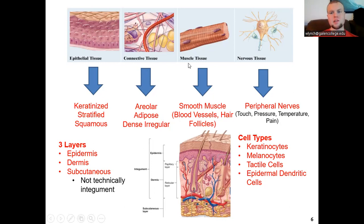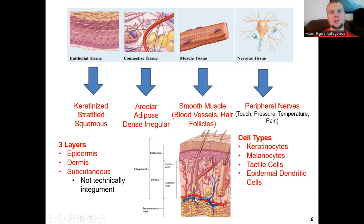Different tissue types exist in the skin. The epithelial tissue comprises the epidermis — a keratinized stratified squamous epithelium, meaning flattened cells filled with keratin protein arranged in multiple layers. The connective tissue in the subcutaneous basement membrane area is areolar. We also have dense irregular connective tissue, smooth muscles attached to sweat glands, hair follicles, and blood vessels, and extensive nerve innervation. In the epidermis we have keratinocytes and melanocytes; in the dermis, tactile and sensation cells.